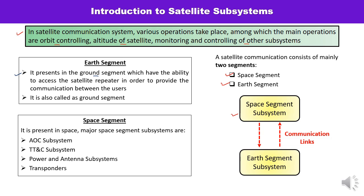The space segment is present in space, and its various subsystems are: AOC, which is the attitude and orbit control subsystem; TT&C, which is the telemetry, tracking and command subsystem; the power and antenna subsystem; and fourth, the transponders. In this introduction to satellite subsystems, we will discuss how many segments there are and what their components are.